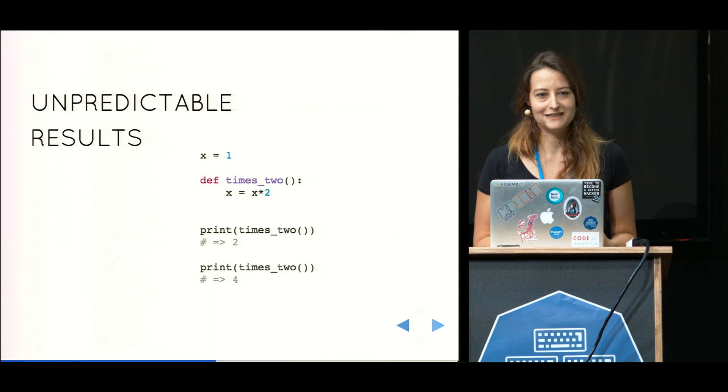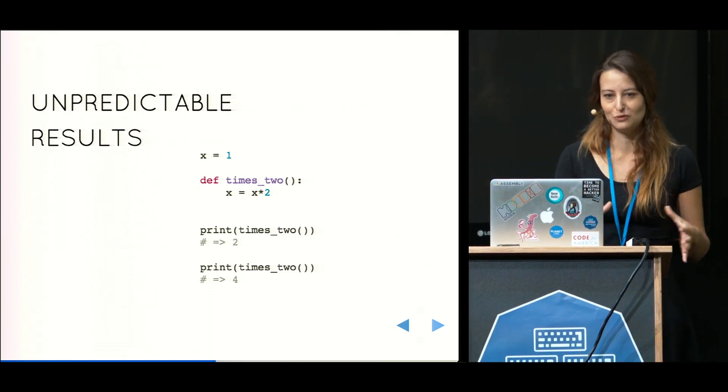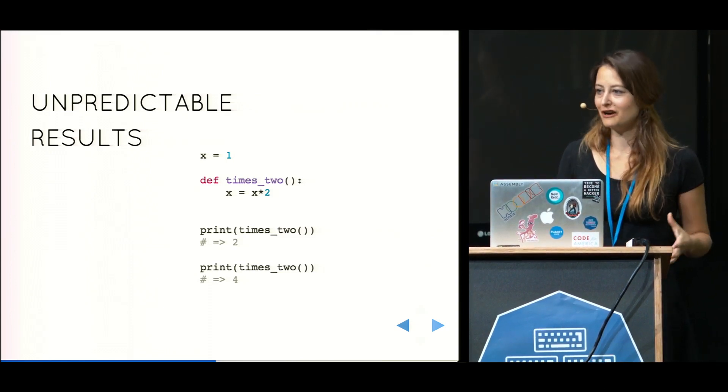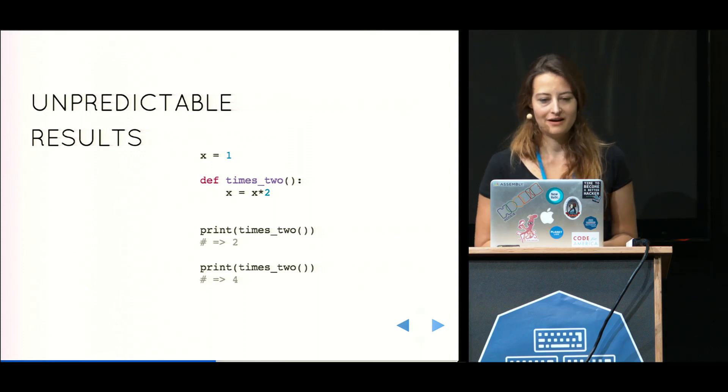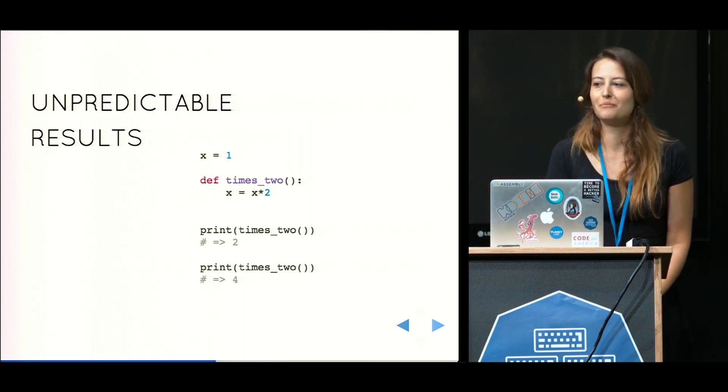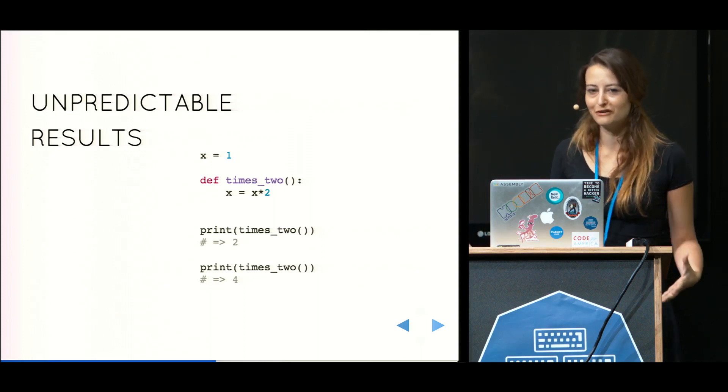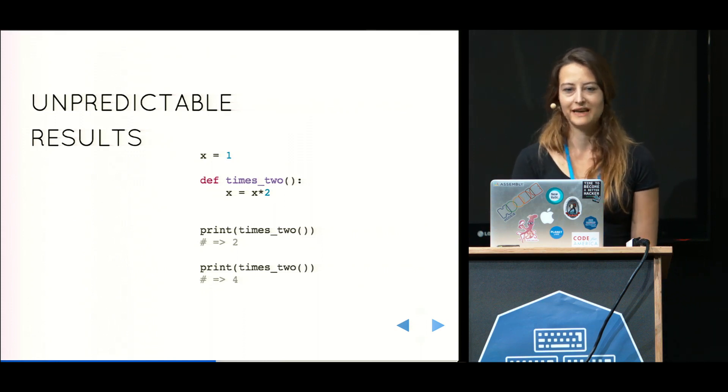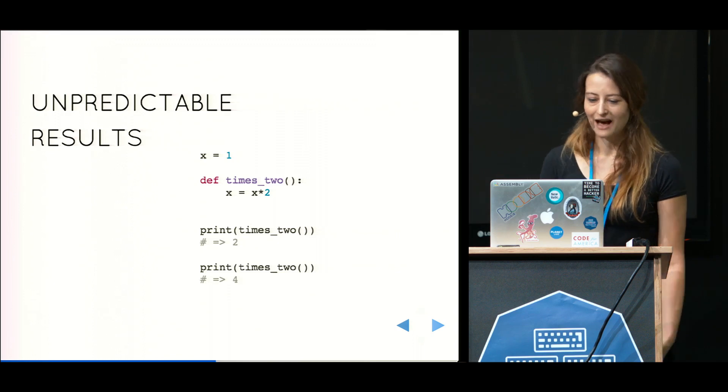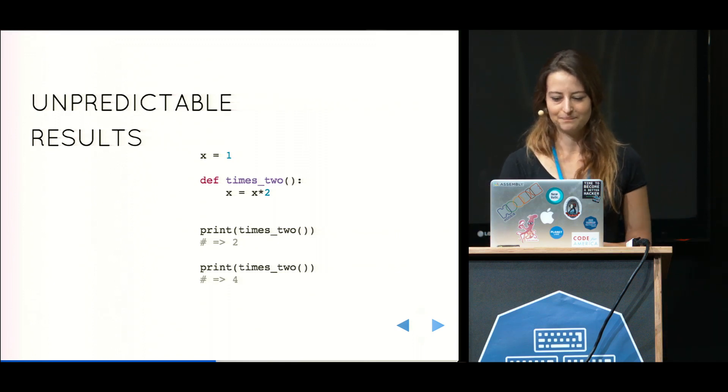So these are some of the problems with state. And this explains why writing code that has the least possible amount of state is very often a good idea. But again, if you're coming from a purely imperative world, you may still be wondering, but changing the state of a variable, how do I write something without that? So I wanted to give a couple of examples.